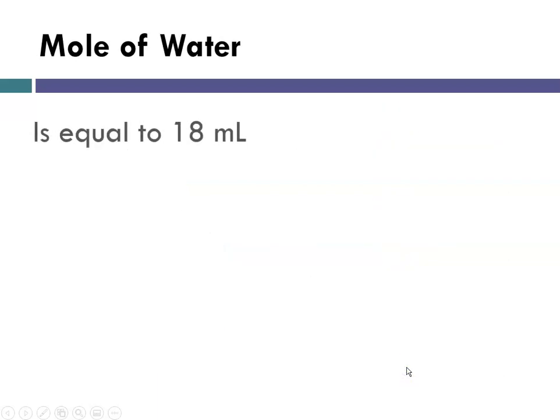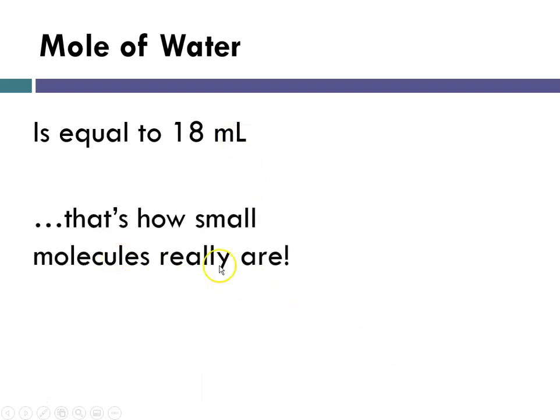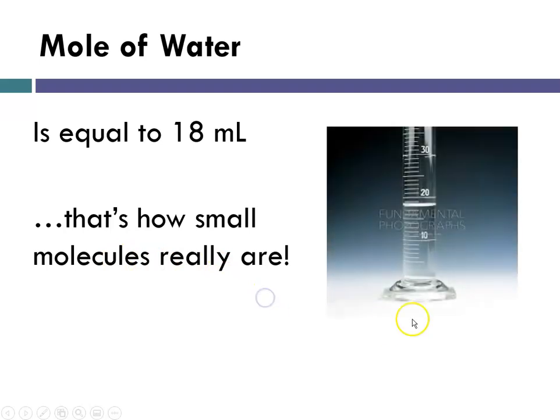What about a mole of water? It turns out that a mole of water is equal to 18 milliliters. And that tells you how small molecules really are. So if I had my little graduated cylinder and I put water in it, when I get to 18 mils, that's the same as one mole of water.